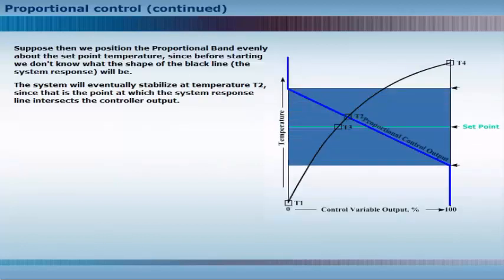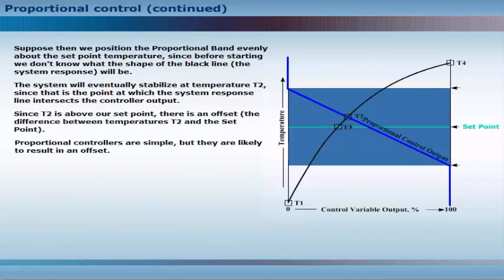Suppose then we position the proportional band evenly about the set point temperature, since before starting we don't know what the shape of the black line will be. The system will eventually stabilize at temperature T2, since that is the point at which the system response line intersects the controller output. Since T2 is above our set point, there is an offset, the difference between temperatures T2 and the set point.